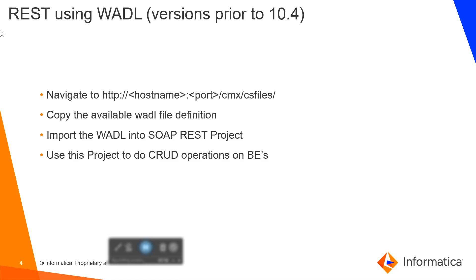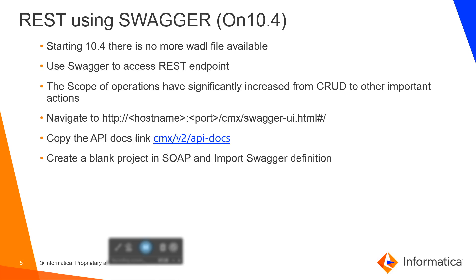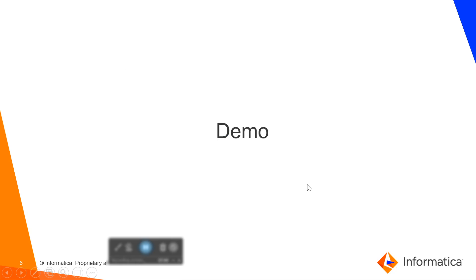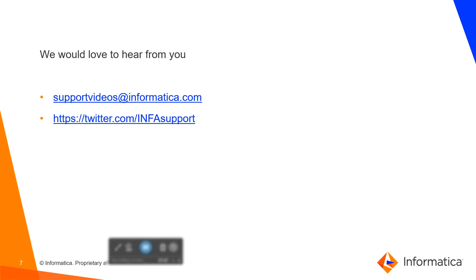To summarize: for REST endpoints using VADL (prior to 10.4), navigate to cmx/cs files, copy the VADL definition, and import it into a SOAP UI REST project to use CRUD operations on business entities. Starting 10.4, since VADL is no longer available, navigate to cmx/swagger-ui.html, copy the cmx/v2/api-docs link, create a blank SOAP UI project, and import the Swagger definition. We would love to hear your feedback on the support channels. Thank you.